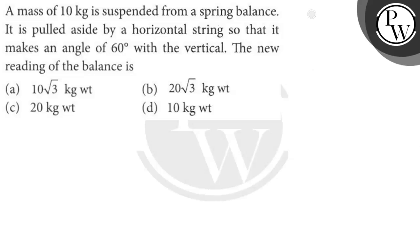First of all, we understand what is spring balance. This is the spring balance. The reading of the spring balance is what the tension is — the tension is the spring balance reading. So in starting, the mass is 10 kg, so T equals mg.